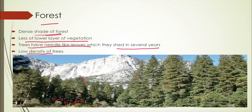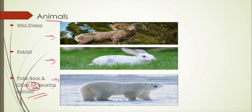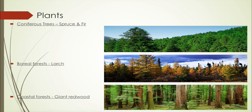There is a low density of trees compared to other forests — not very thick, with less shade overall. Animals found here include wild sheep, rabbits, polar bears, and other fur-bearing animals. The main plants are coniferous trees like spruce and fir. In boreal forests found in America, the main tree is larch, and in some coastal areas we find giant redwoods.